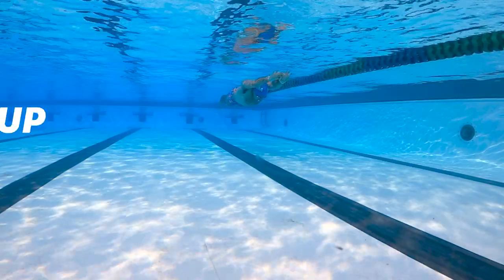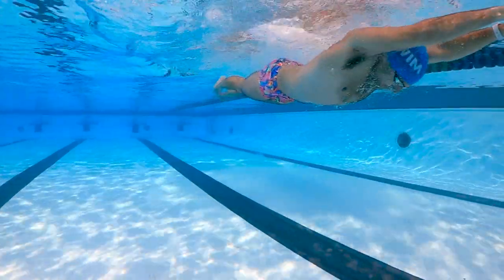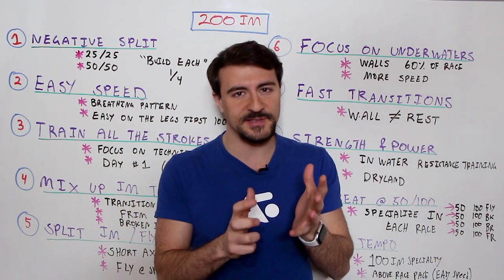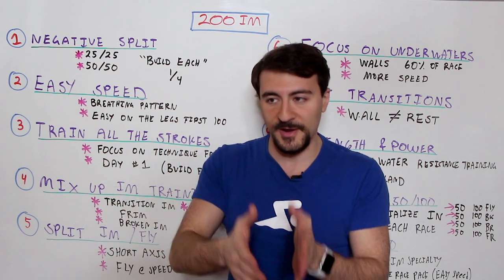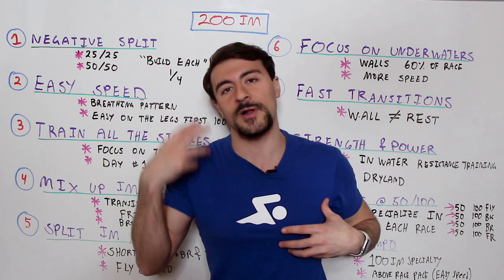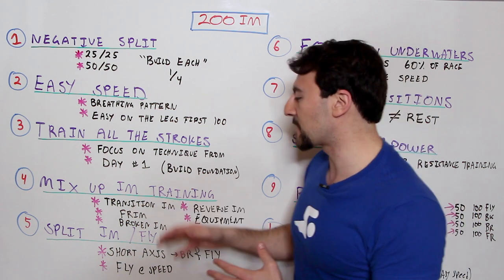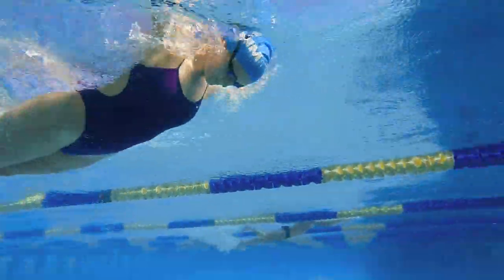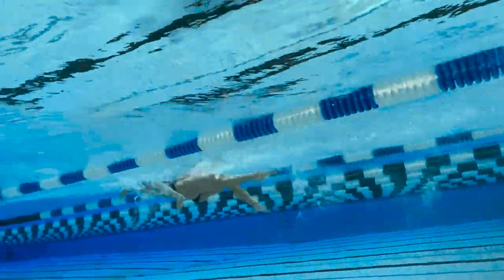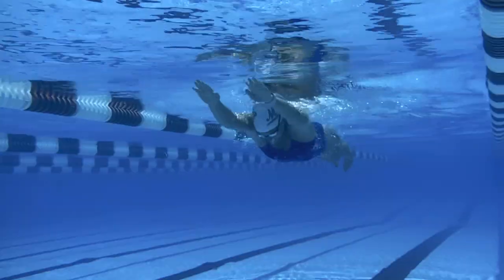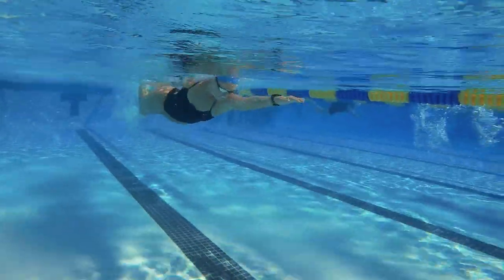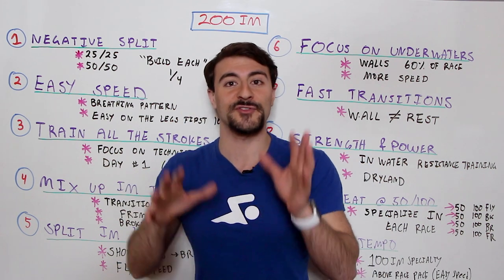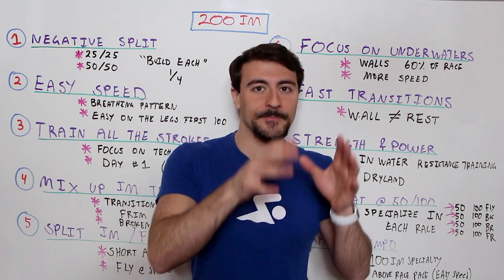Tip four: mix up how you do your IM training. Don't just do fly-back-breast-free in standard IM form — that gets boring physically and mentally. One great variation is transition IM: do sets of 50s or 100s in a cycle where the first 50 is butterfly on the first half and backstroke on the second half, then backstroke-breaststroke, then breaststroke-freestyle. Whatever stroke you finish with is what you start with on the next 50 — great for working on stroke transitions.